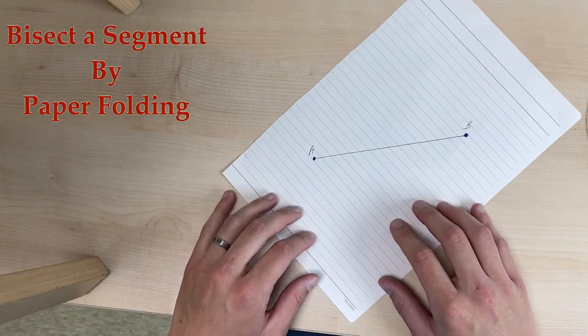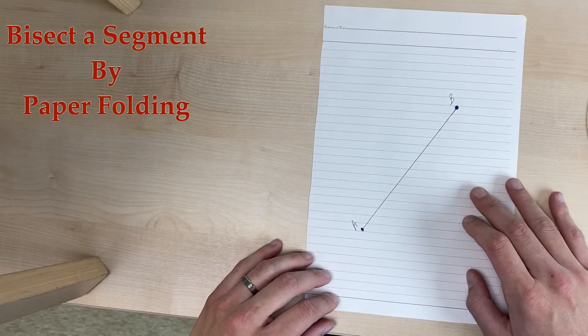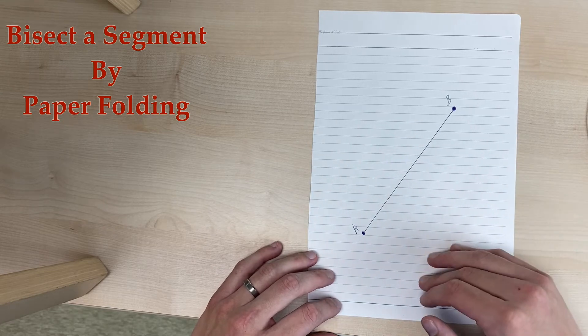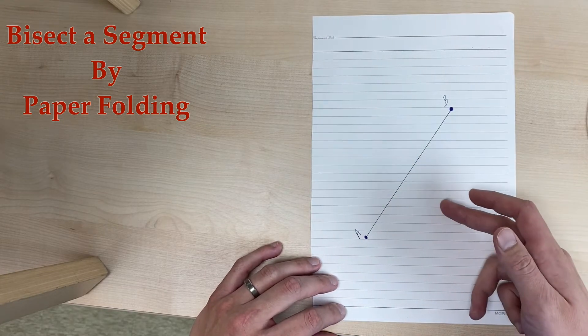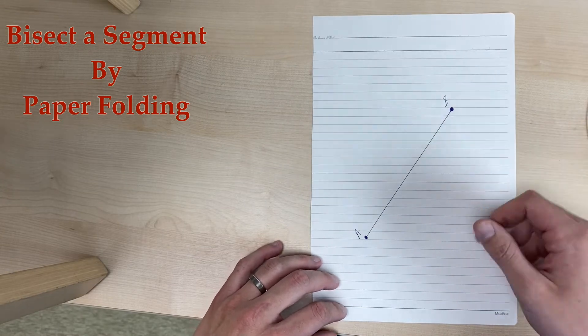So here is our segment. We have line segment AB. And to do this construction, we're going to fold our paper so that the endpoints lay on top of each other. And that's going to create a crease right in the middle of our segment, which will act as our segment bisector.